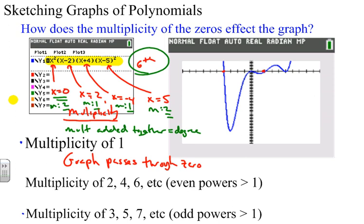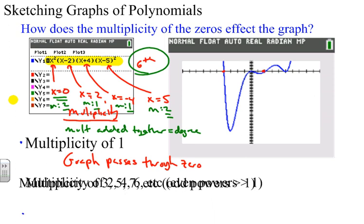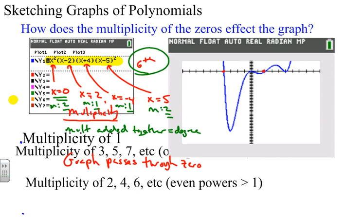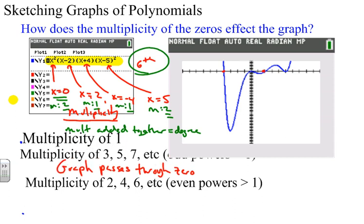And that's the same case when you have an odd degree. They all pass through. The graph always passes through. So all these, they just have to pass through.